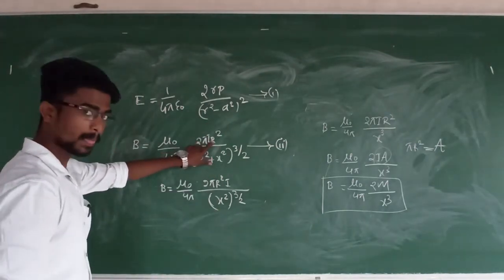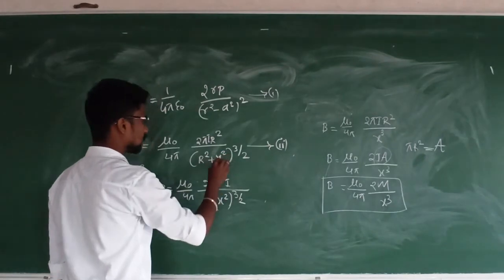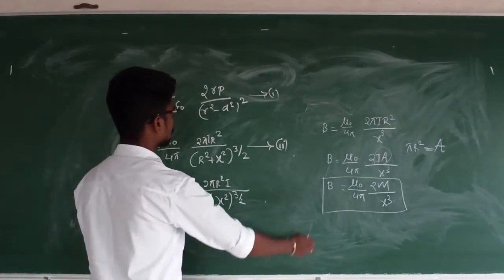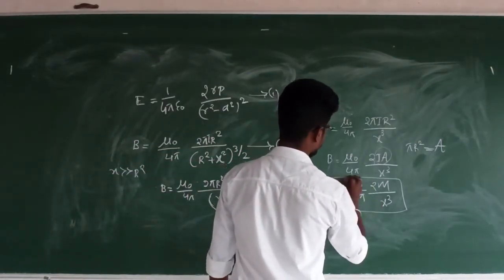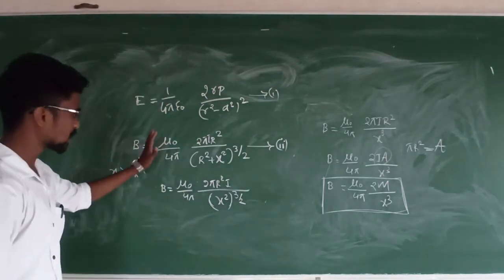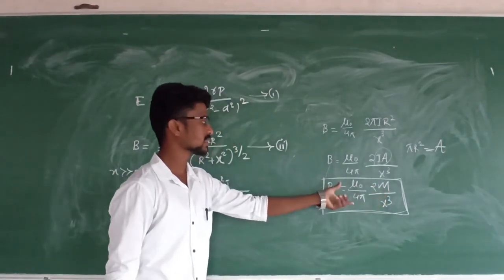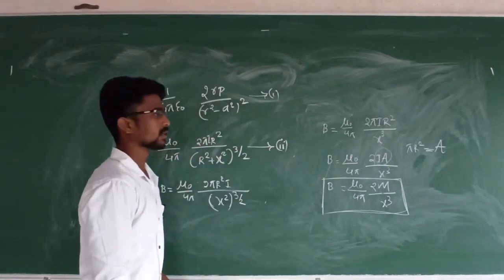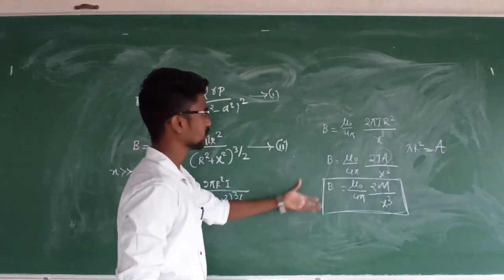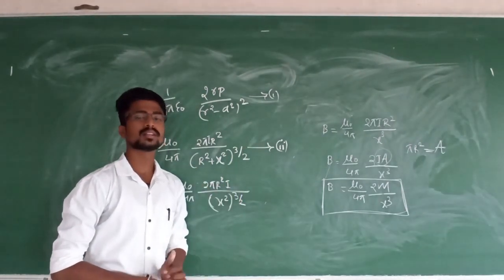Here, r is the radius of the circular loop and x is the distance of the point on the axis. This expression is similar to the electric dipole axial field expression. This confirms that a current-carrying loop behaves as a magnetic dipole. That is all for today's session. I hope this is clear to you all. Thank you.